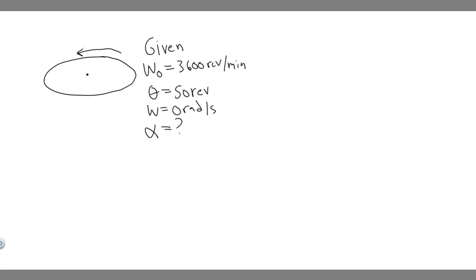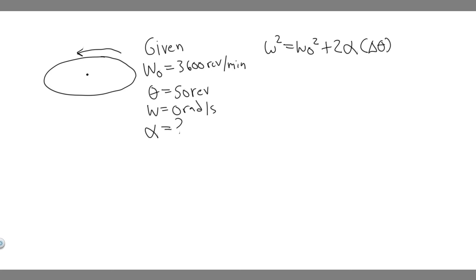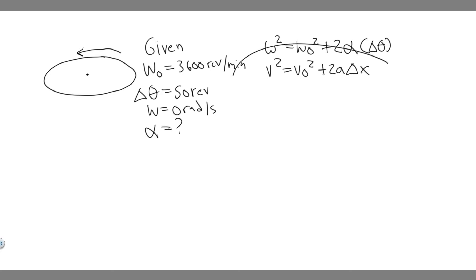The way you want to solve these is just like normal kinematic equations but with rotational kinematic variables. The equation we want to use is omega squared equals the initial angular velocity squared plus 2 times alpha times delta theta. This should be familiar — it's analogous to v squared equals v sub zero squared plus 2a times delta x from linear kinematics. The variables are just the same but for rotational motion.